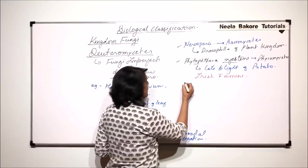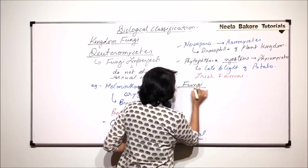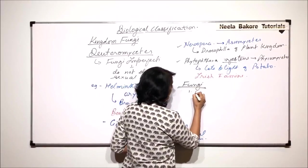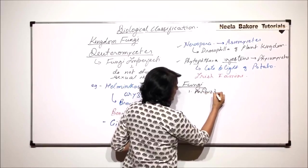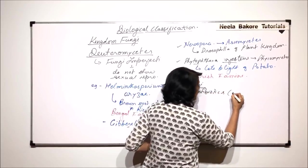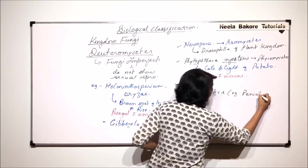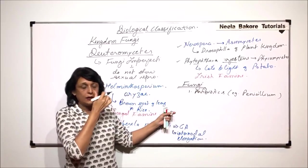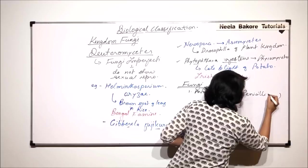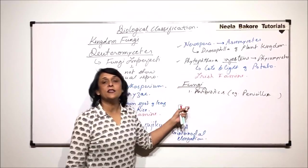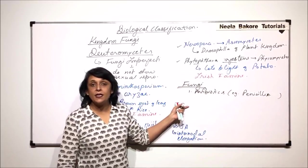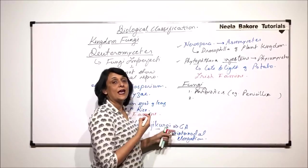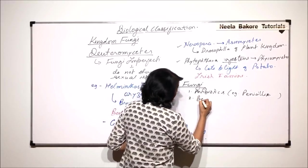Now when we talk of fungi in general, what exactly do we get from these fungi? The first and most important thing is antibiotic. We obtain antibiotics from Penicillium, and this antibiotic Penicillin is obtained from Penicillium, which is known as the wonder drug.